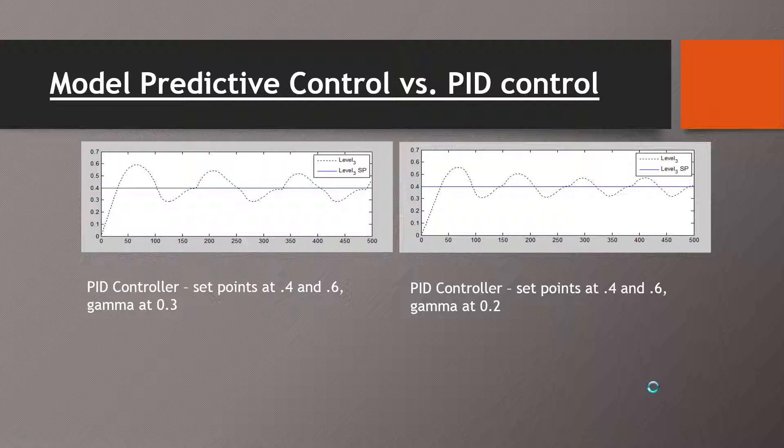Ultimately, the PID controller seemed better for when our set points were different, but when the set points were equal at 0.5, the model predictive controller worked best.